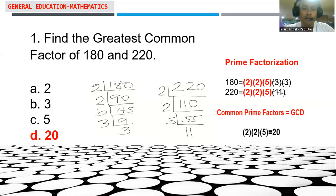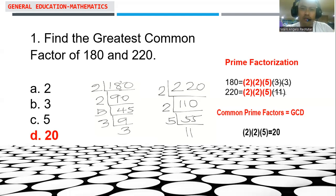Before we find the greatest common factor of 180 and 220, let's look into a very important process that may help you find the value of this problem. This is what we call the prime factorization process — a process of looking for the prime factors of numbers, such that if you multiply these numbers, it gives you that number itself.